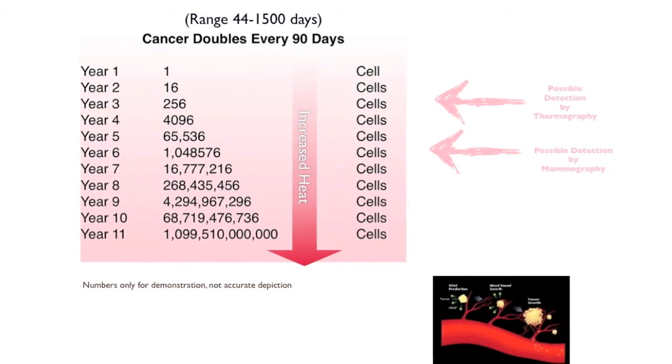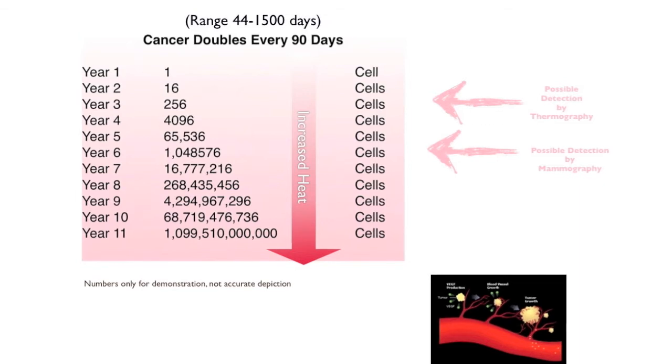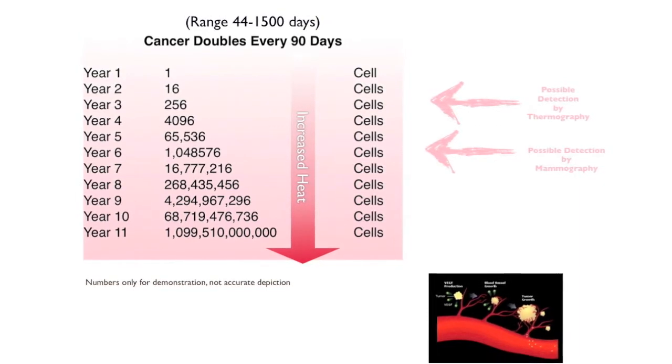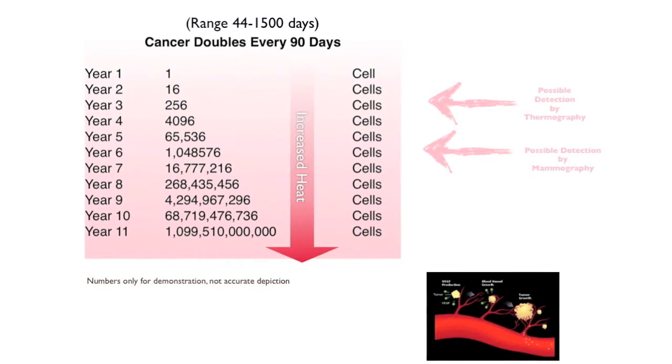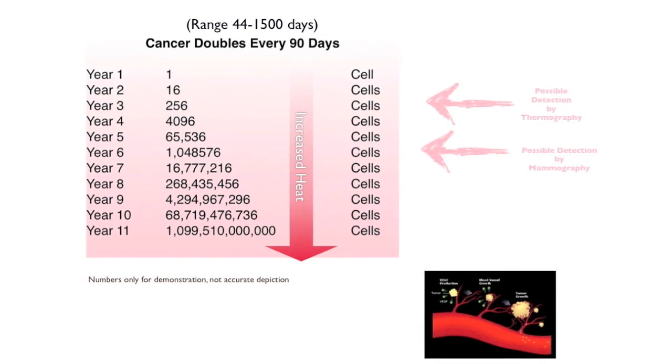They say mammograms can pick up approximately a one centimeter tumor at approximately four million cells. So that would be on our chart here as approximately six to seven years. That would be six to seven years of this tumor developing before it would be detectable by a mammogram.